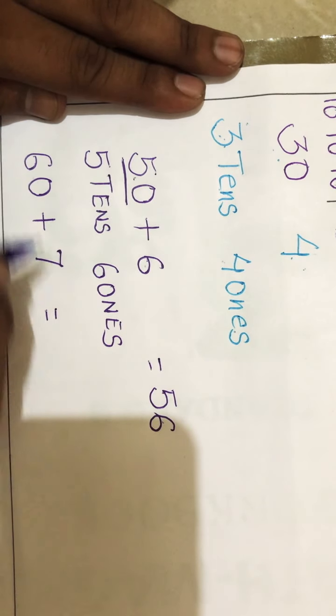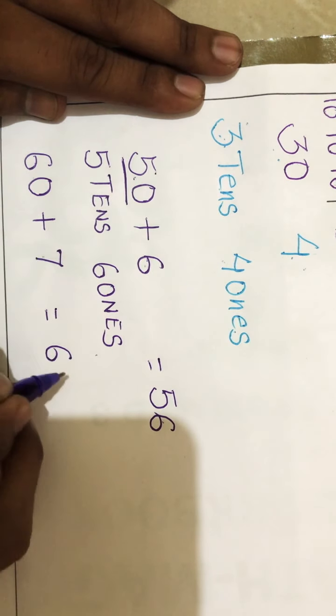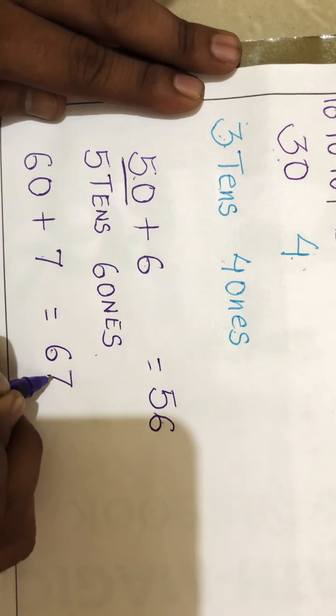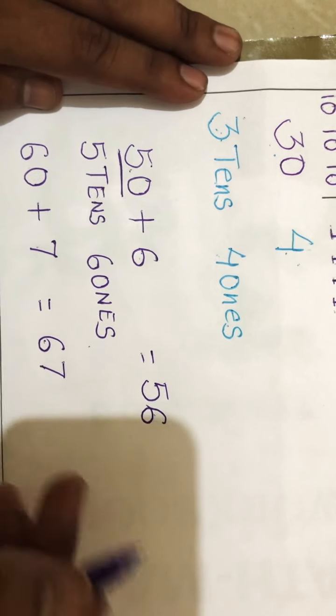Seven. Six tens, so you will write six at tens place, and seven ones, you will write at ones place. So the number will be 67. Understood, yes or no?